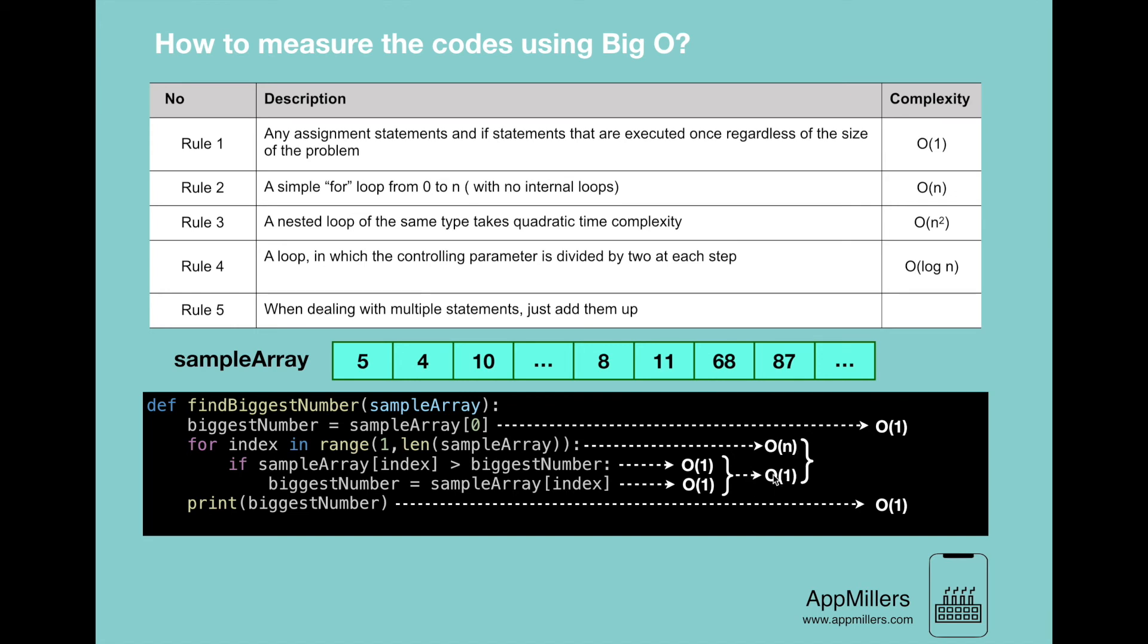Because from previous lectures we know that we can drop non-dominant terms from a time complexity. So here O(1) is non-dominant term. The dominant term here is O(n). So the result from here we will get O(n).